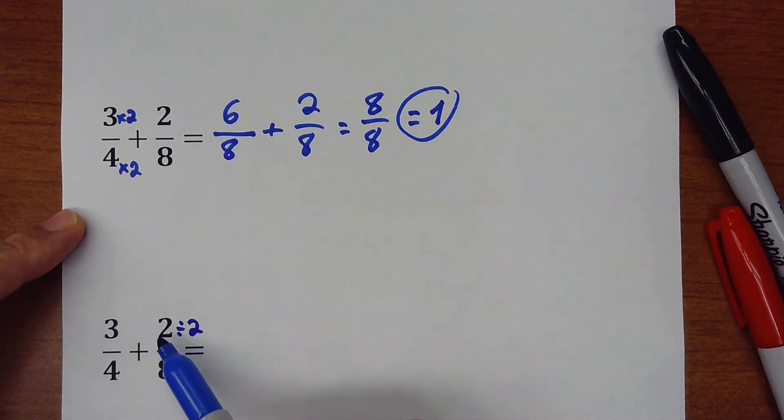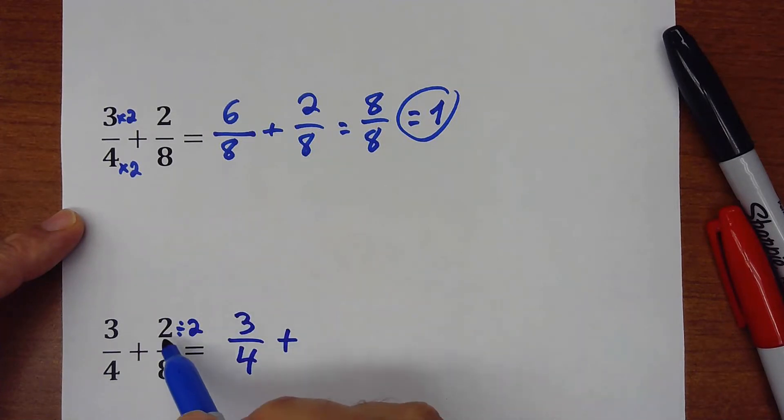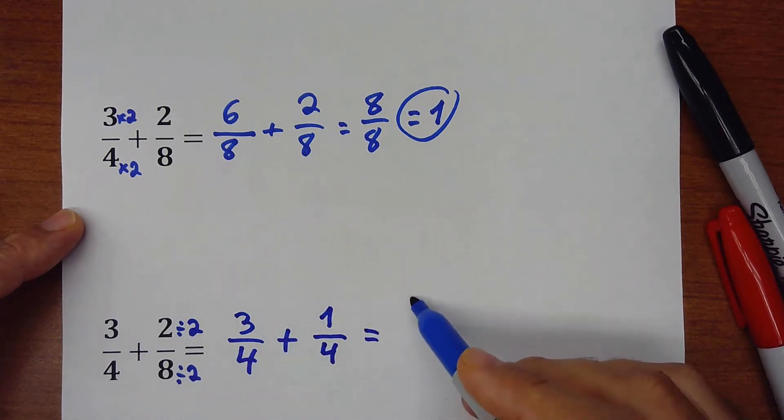Now if the number on top is not divisible by 2, I cannot divide the bottom by 2 in this case. So here I put the first fraction as the same, 3/4, plus 2 divided by 2 is 1, 8 divided by 2 is 4. So here I have now 4 over 4, and that would be equals to 1.